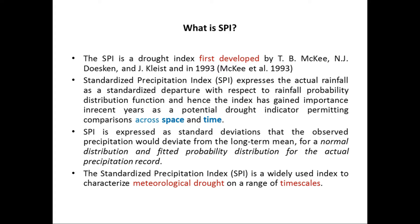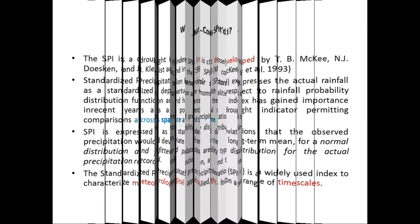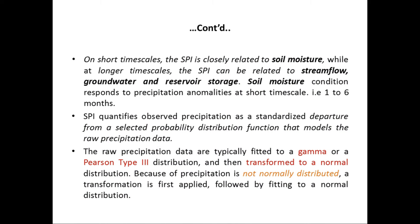SPI is a widely used index to characterize meteorological droughts on a range of time scales. On short time scales, SPI is closely related to soil moisture, while at longer time scales it can be related to streamflow, groundwater, and reservoir storage. Soil moisture conditions generally indicate agricultural droughts, responding to precipitation anomalies at shorter time scales, most probably ranging from one to six months.